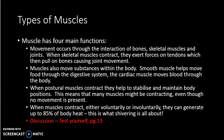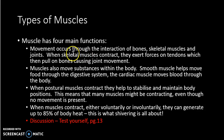Looking at skeletal muscle specifically, it has four main functions. The first is movement, which occurs through the interaction of bone, skeletal muscle, and the joints. When skeletal muscles contract, they exert forces on the tendons, which pull on the bones, causing joint movement.